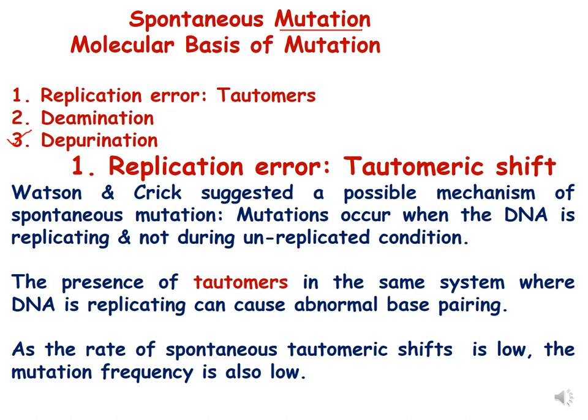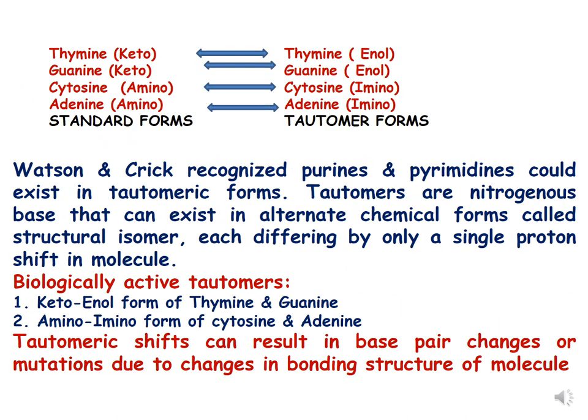In the standard form, thymine exists in keto form and its tautomeric form is in enol form. The standard form of guanine is keto and its tautomeric form is enol. The standard form of cytosine is amino and its tautomeric form is imino. The standard form of adenine is amino and its tautomeric form is imino. Watson and Crick recognized that purines and pyrimidines could exist in tautomeric forms — nitrogenous bases that can exist in alternate chemical forms which are structural isomers, differing by only a single proton shift.